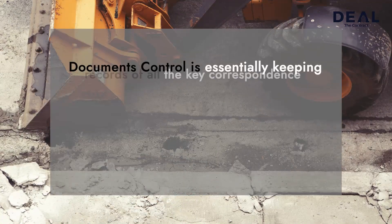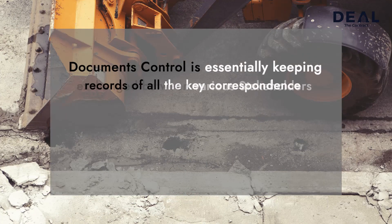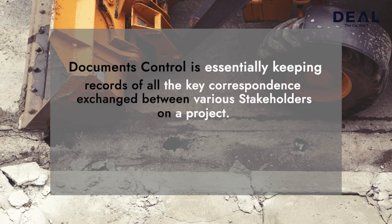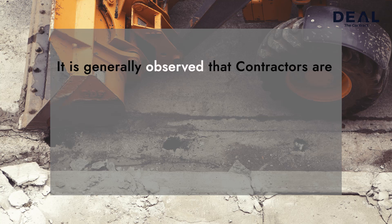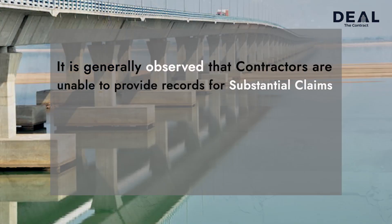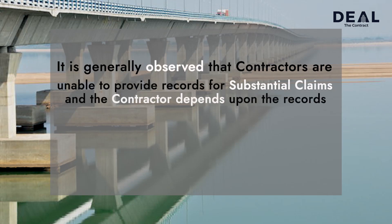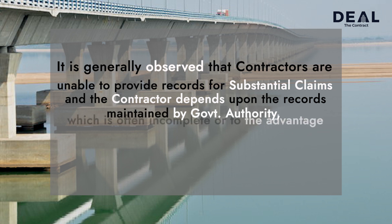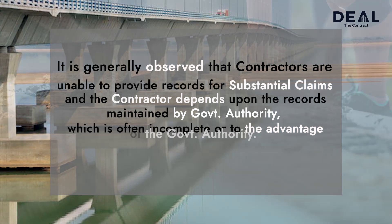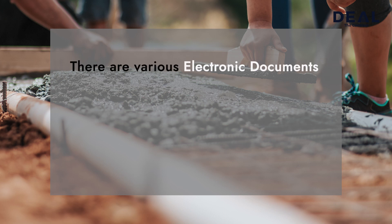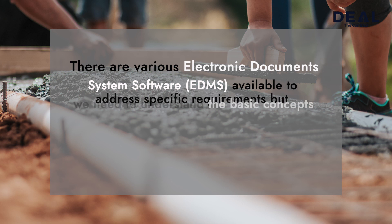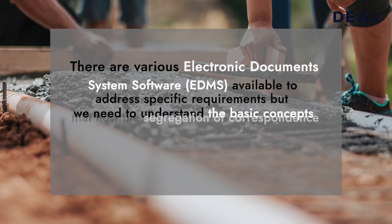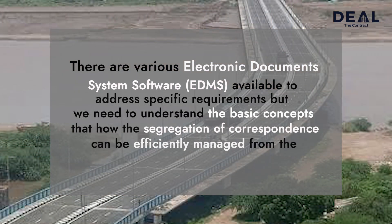Documents Control is essentially keeping records of all the key correspondence exchanged between various stakeholders on a project. It is generally observed that contractors are unable to provide records for substantial claims and the contractor depends upon the records maintained by the government authority, which is often incomplete or to the advantage of the government authority. There are various electronic document systems software available to address specific requirements, but we need to understand the basic concepts of how the segregation of correspondence can be efficiently managed from the perspective of construction claims.